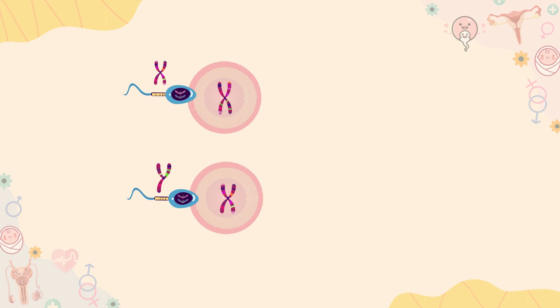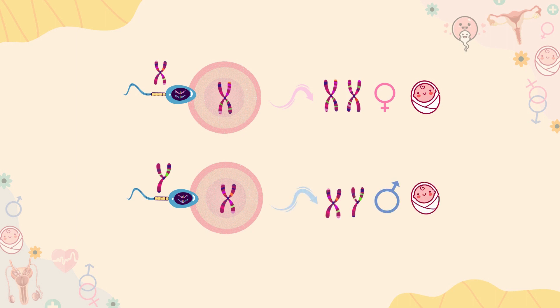When an X-bearing sperm fertilises an egg, a female is conceived, as females have XX chromosomes. And when a Y-bearing sperm fertilises an egg, a male is conceived, as it is the male who has XY chromosomes. Hence, the sex of the child depends upon the male partner.